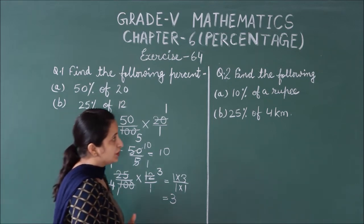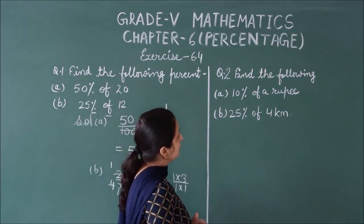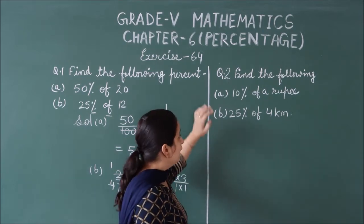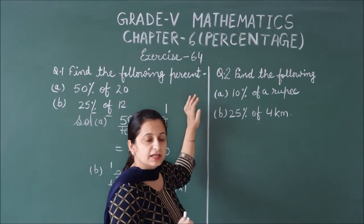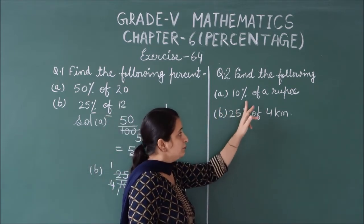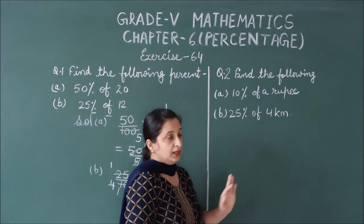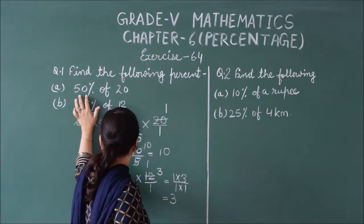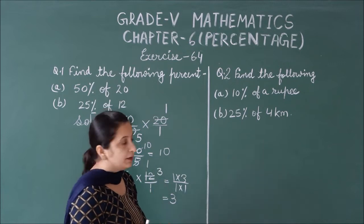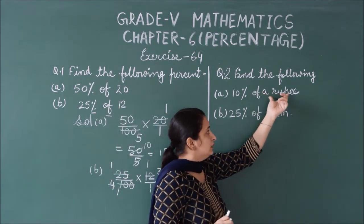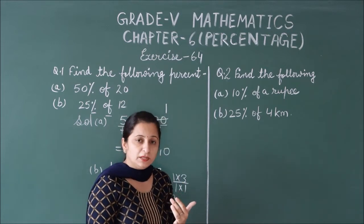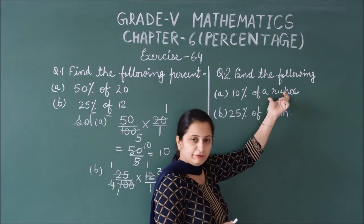Now let's move to question number 2. Question number 2 is: find out the percentage. This is similar to question number 1. This part is 10% of Rs. 1 — similar to 50% of 20. Here we have a number with a condition; we can have length, weight, or money as a given unit.